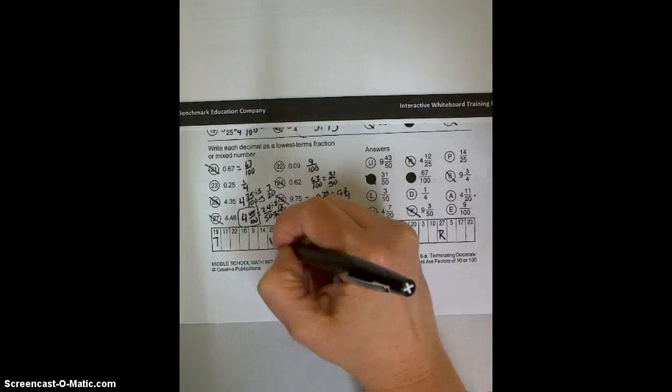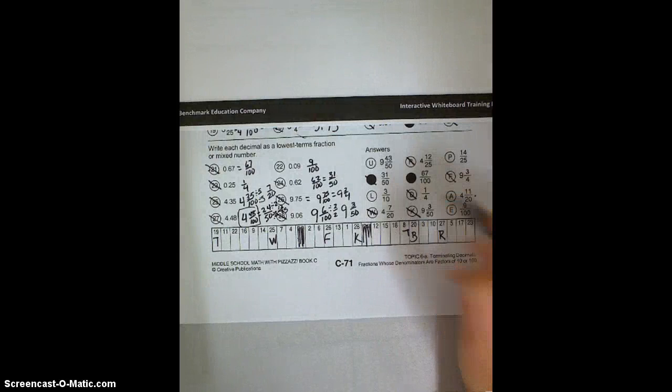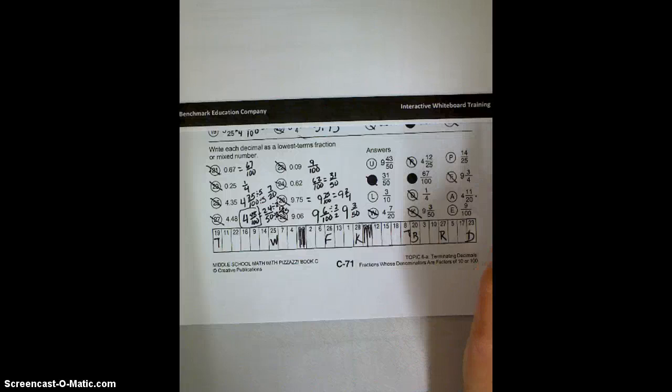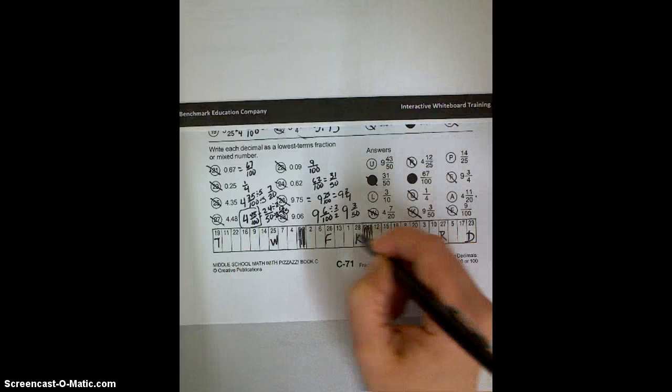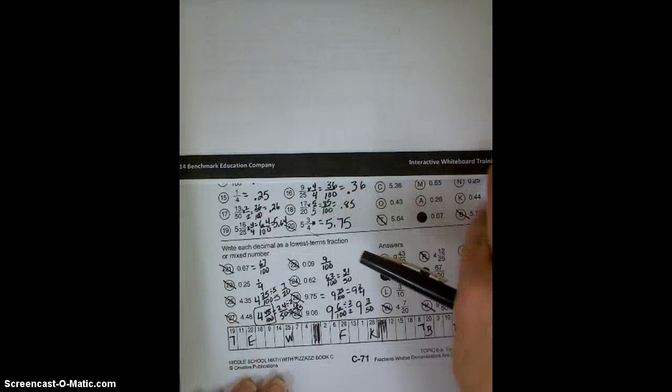23 is 1 fourth. 23 is D. 22 is 9 hundredths. So 22 is E. We got them all at the bottom. And fifth graders, I'm going to stop there and let you finish up the puzzle. Thanks for working with me today.